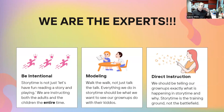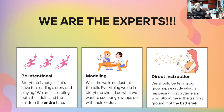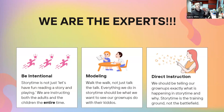Modeling is what just about everybody does at story time — everything we do should be what we want to see our grown-ups do with their kiddos at home. We should be pointing at the books as we're reading, interacting, and engaging. The other thing becoming more common is direct instruction: we should be telling grown-ups what's going on. Story time is a place for them to learn. It's the training ground; the battlefield is at home the rest of the time. Story time is a lesson for the parents just as much as the kids.